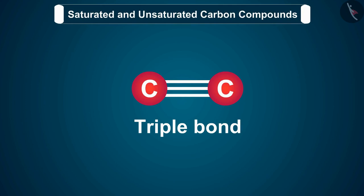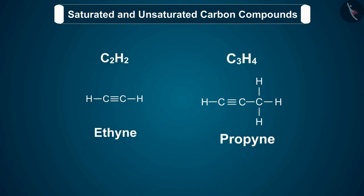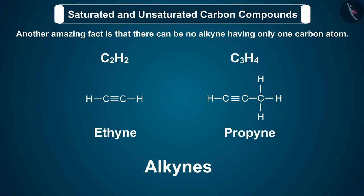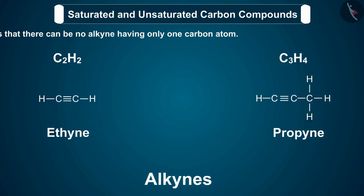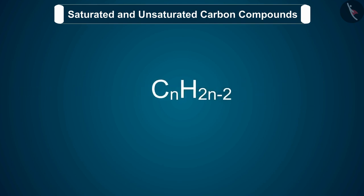Let us now discuss alkynes. These are unsaturated hydrocarbons in which two carbon atoms are connected by triple bonds. The alkynes contain a triple bond between carbon atoms, which is formed by the sharing of three pairs of electrons. Ethyne and propyne are alkynes because they contain a triple bond between two carbon atoms. Also, there can be no alkyne having only one carbon atom.